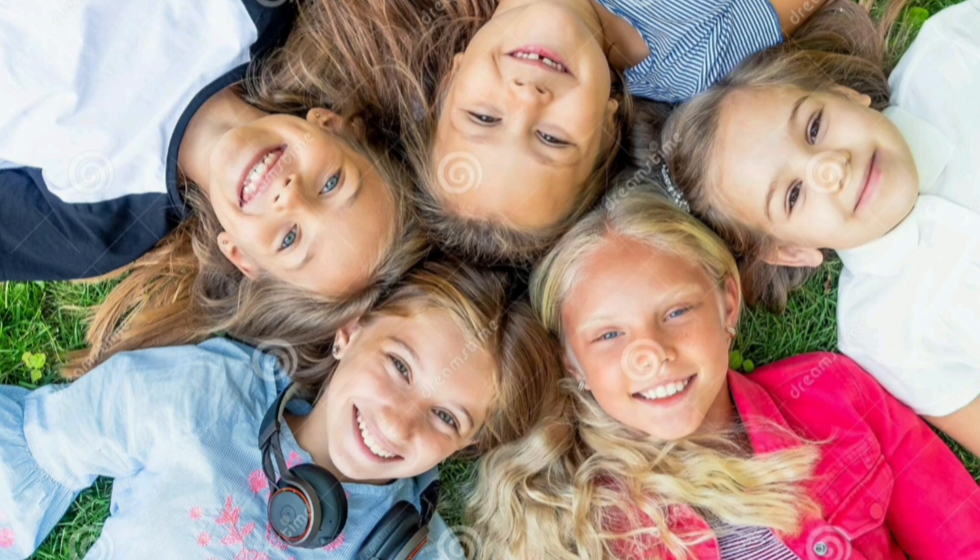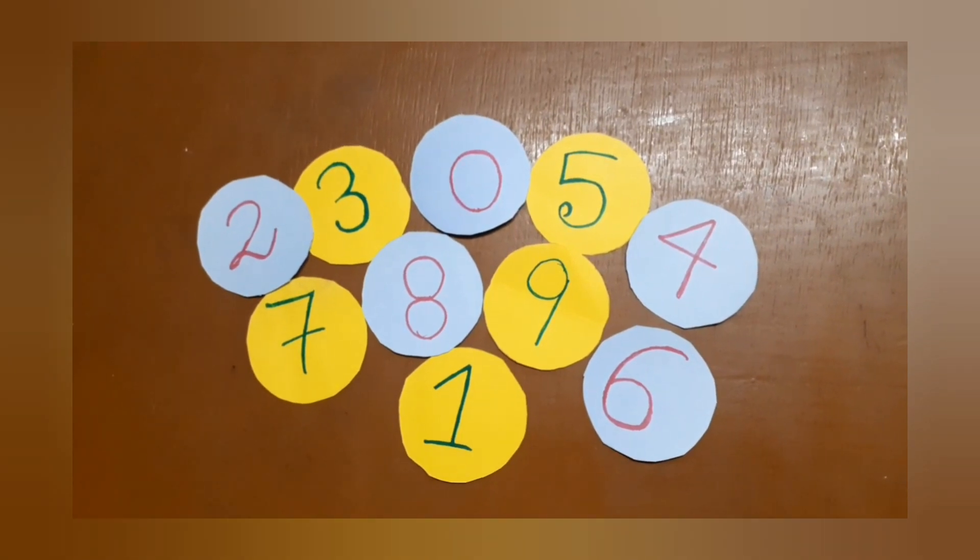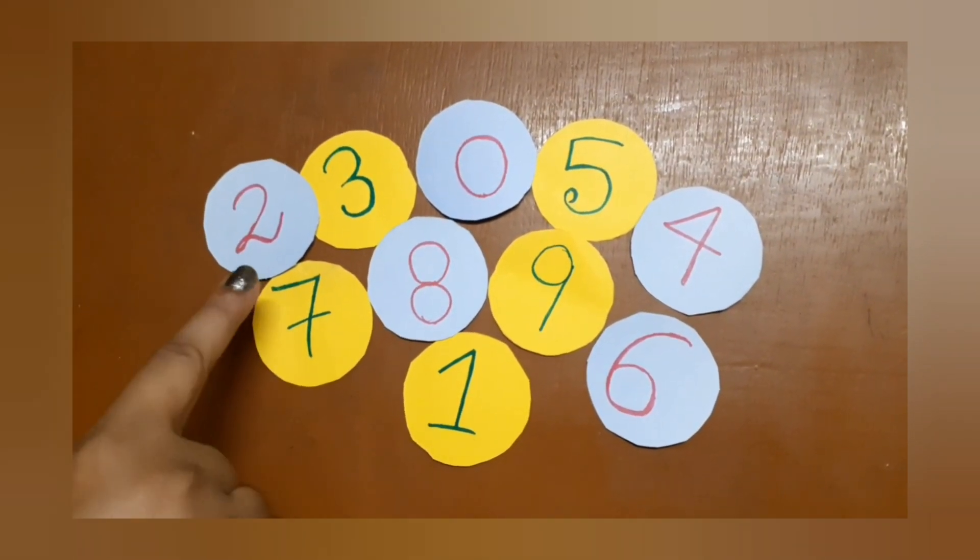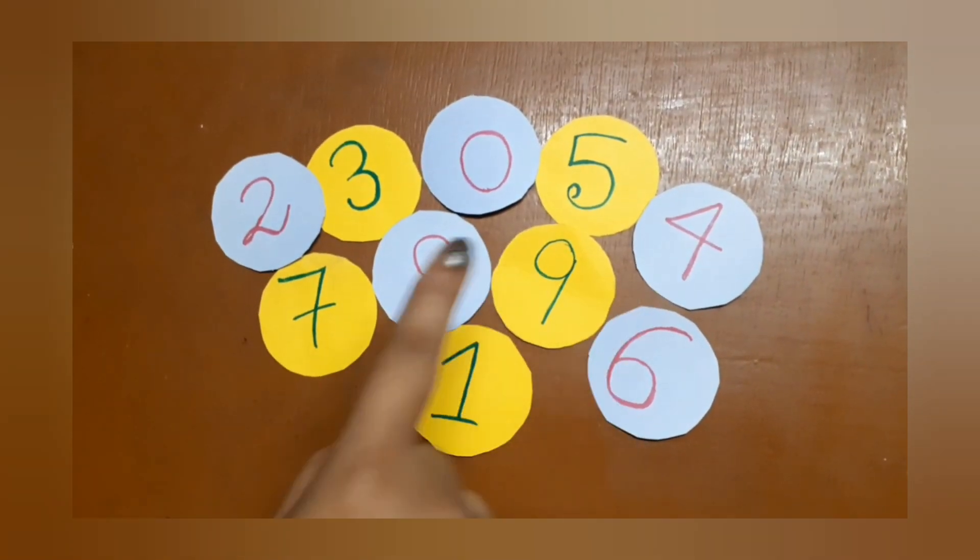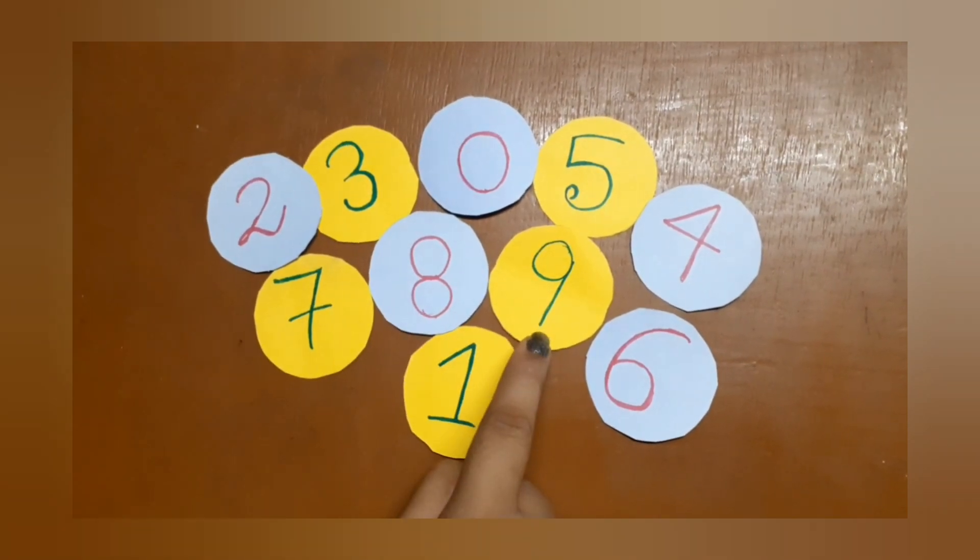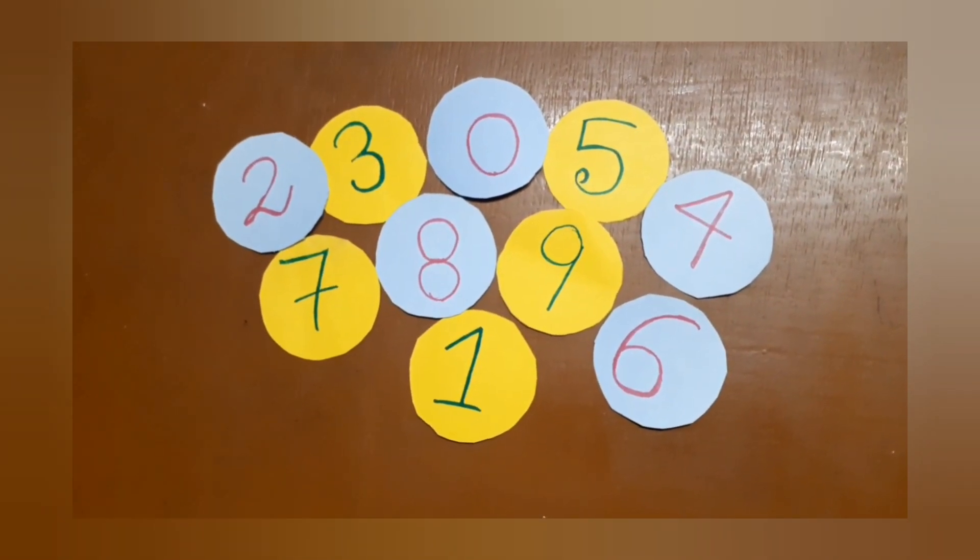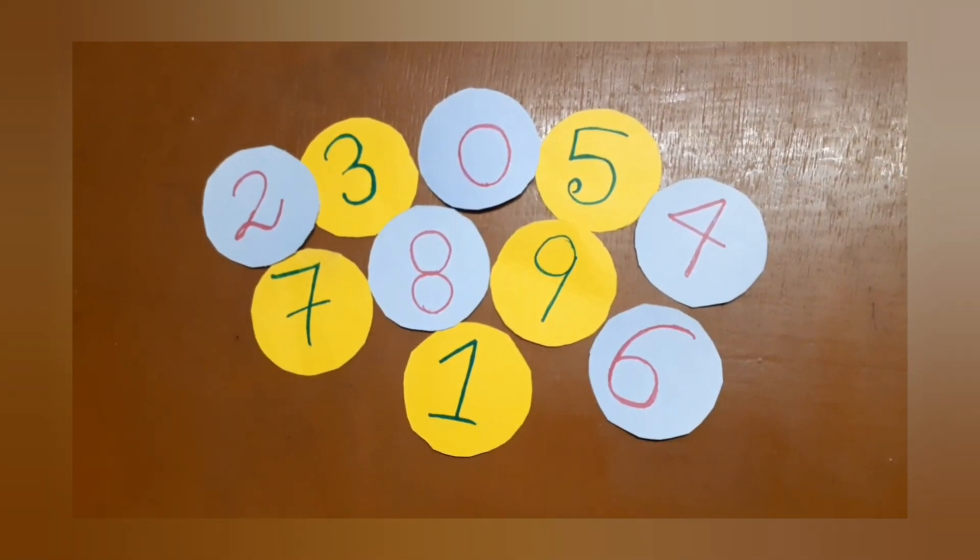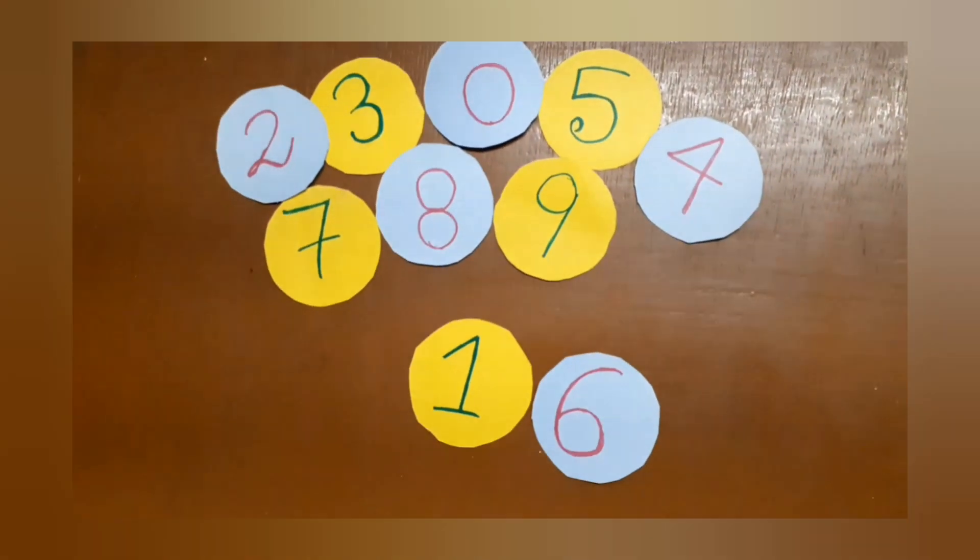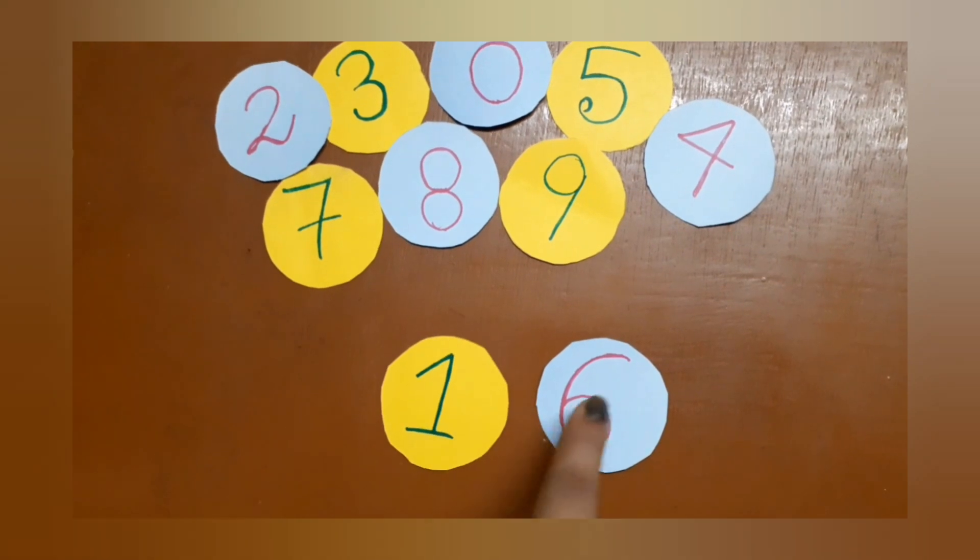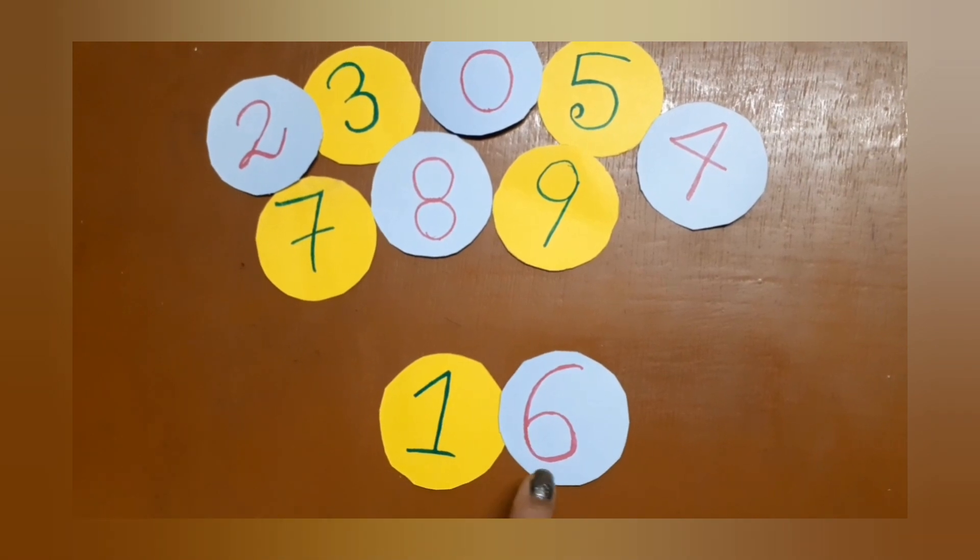Here we have some numbers. You can see we have the numbers here. Let's try to read them: two, three, zero, five, four, seven, eight, nine, six, one. You can see the numbers are kept haphazardly. Now from all these numbers we will choose any two numbers. Let's take one and six. If we put them together which number do they become? Yes kids, one six - sixteen.